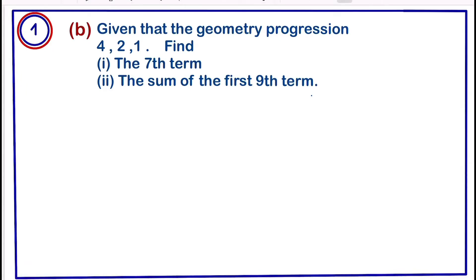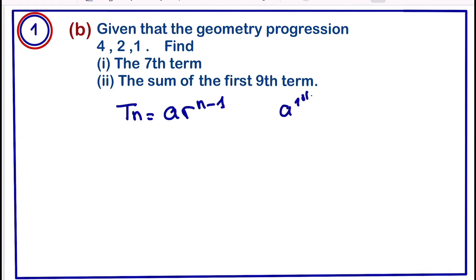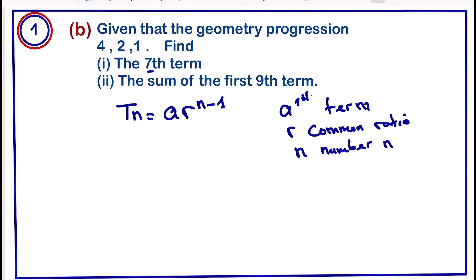For question 1b, we are given a geometric progression where the first term is 4, the second term is 2, and the third term is 1. We are asked to find the seventh term. The formula for the nth term of a geometric progression is T_n = a × r^(n-1), where a is the first term, r is the common ratio, and n is the term number. So a = 4 and n = 7.